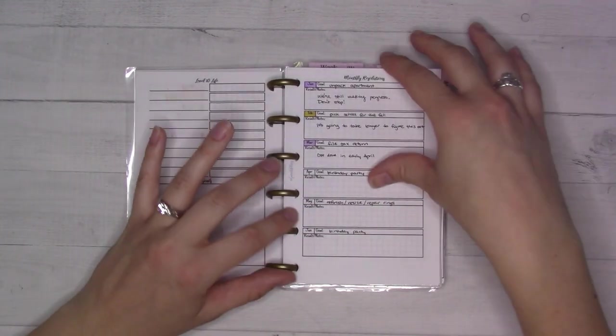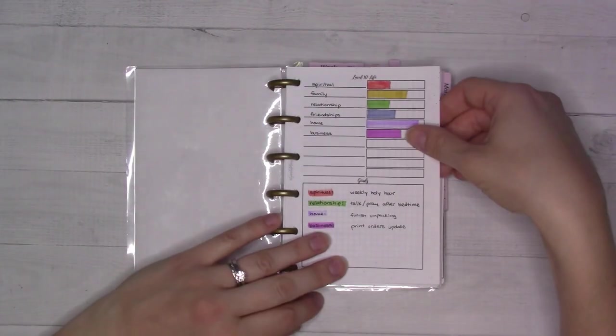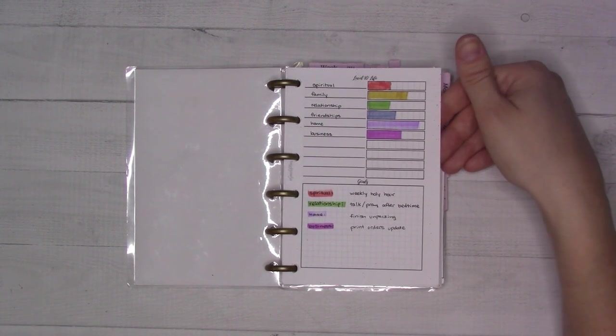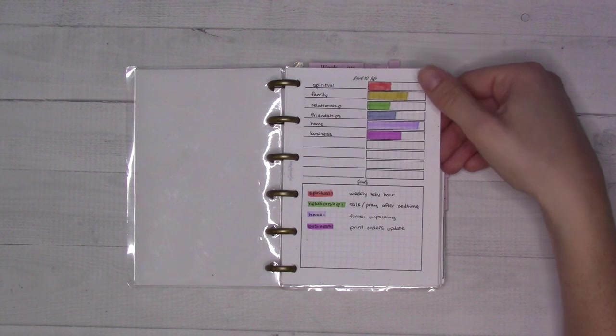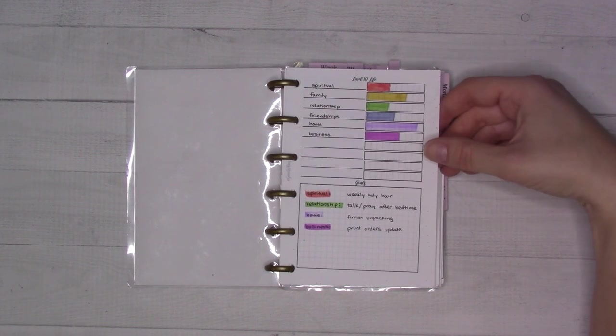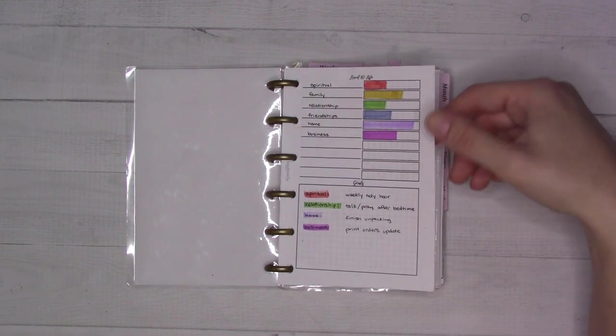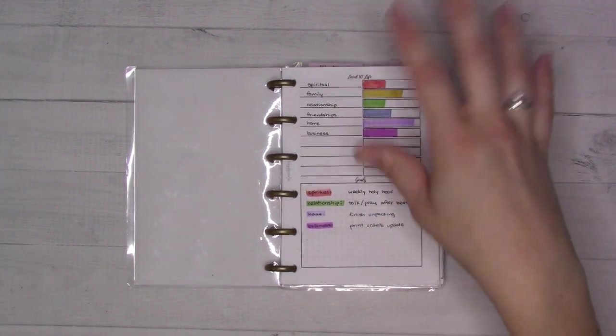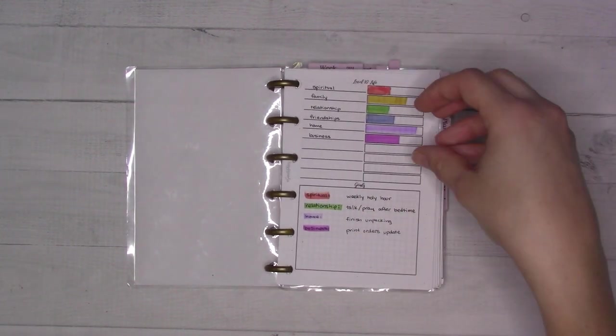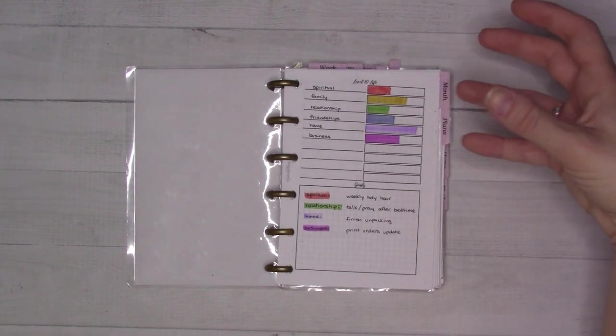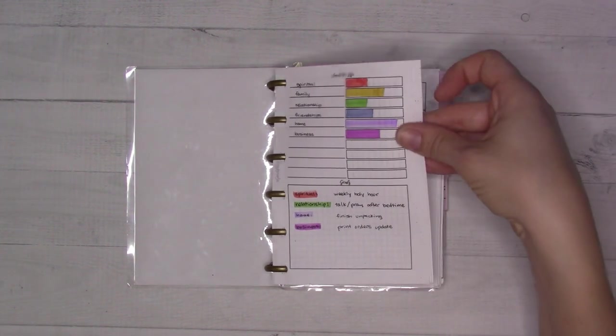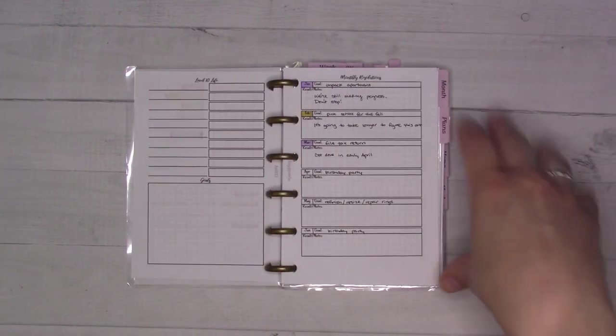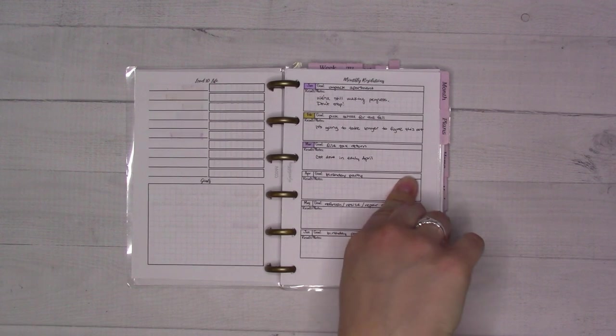Anyway, all that out of the way, Level 10 Life is the first thing in here. I set this up back when I set up this whole planner in January and then glanced at it every so often. This is more useful to me as I do it and then set some goals, but I don't come back and look at this very often, maybe at the goals but not, you know. So it's useful to compare, but I didn't do a comparison one because I didn't really feel like I wanted to. But that's, all of these inserts by the way are available in my shop, ganchieplans.com.